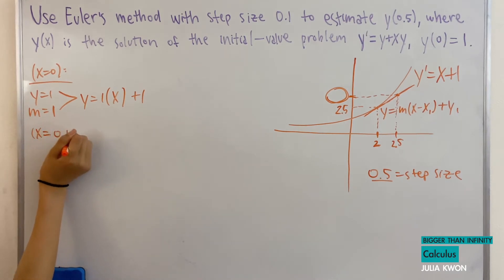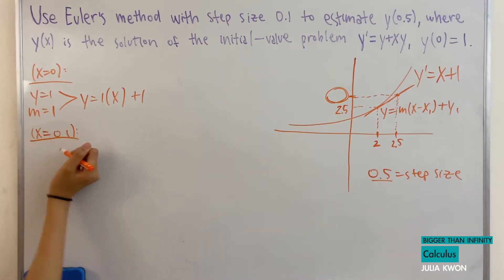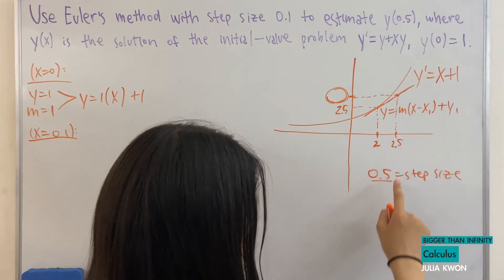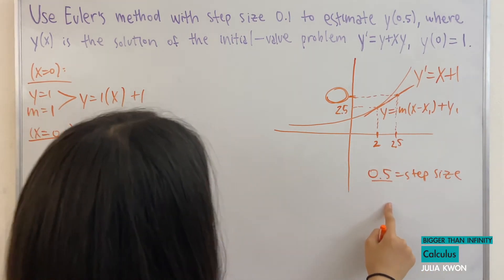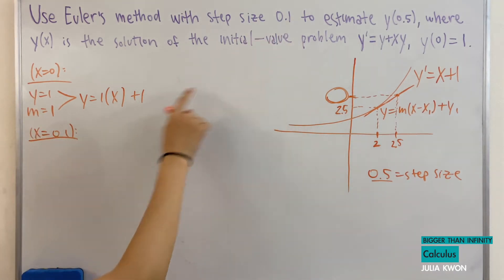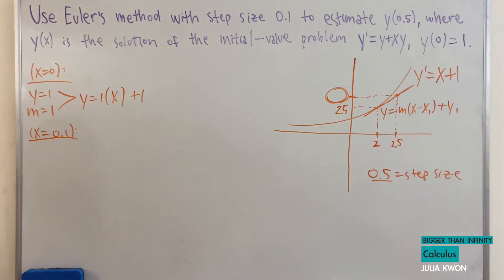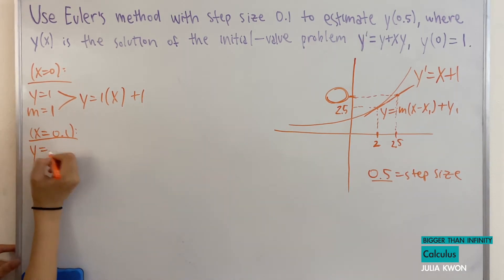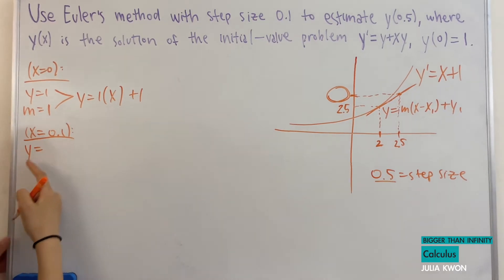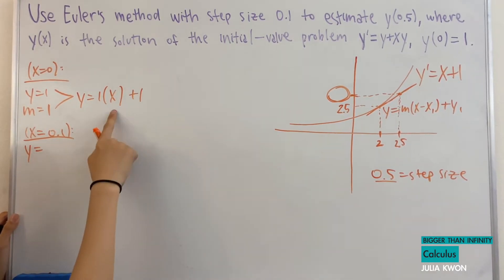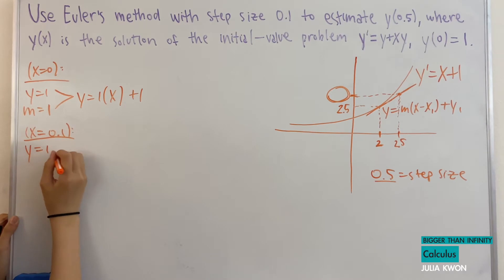The step size is 0.1, so we move on to x = 0.1. We approximate the y value at x = 0.1 by plugging into the tangent line: y ≈ 0.1 + 1 = 1.1.